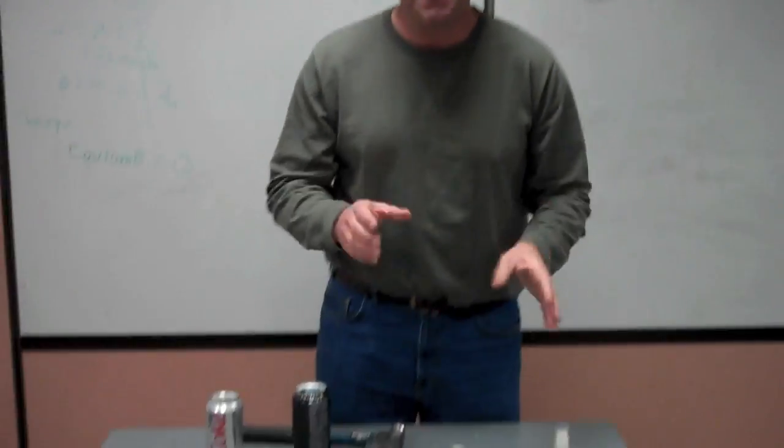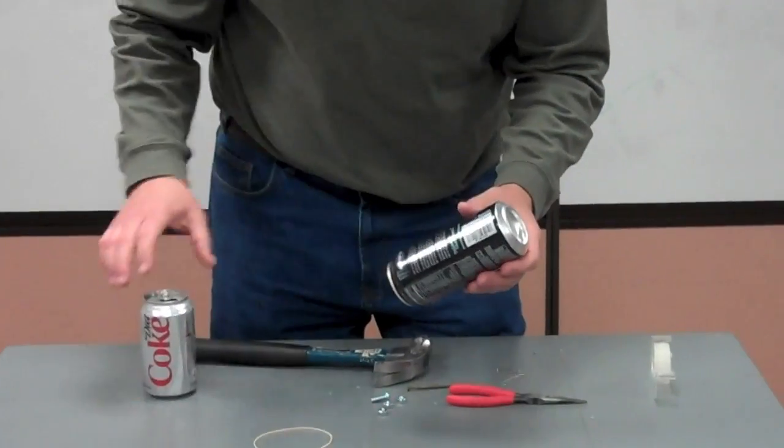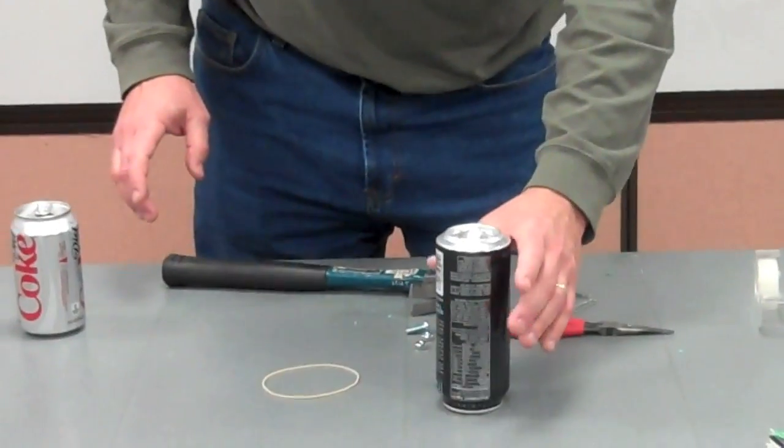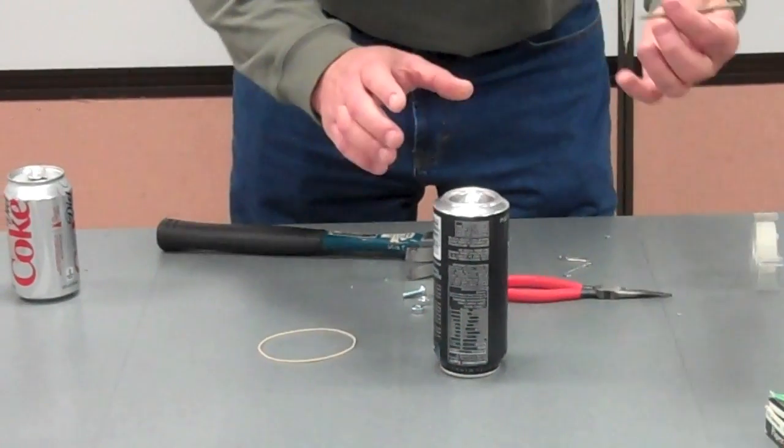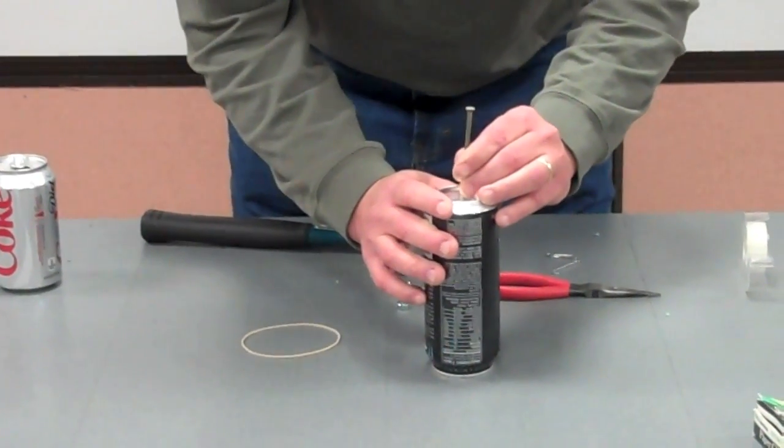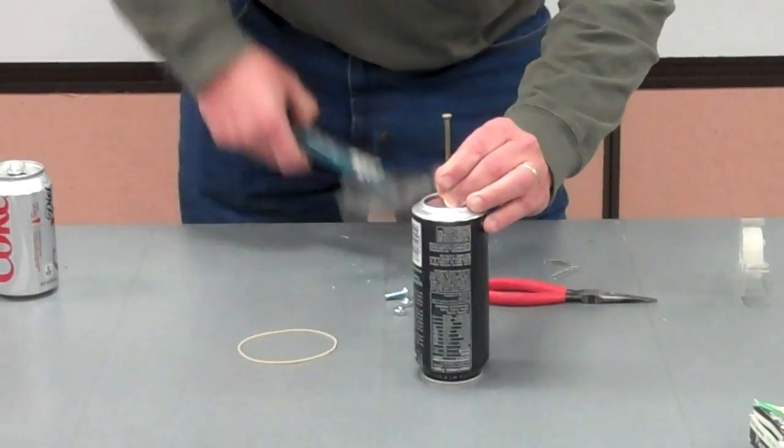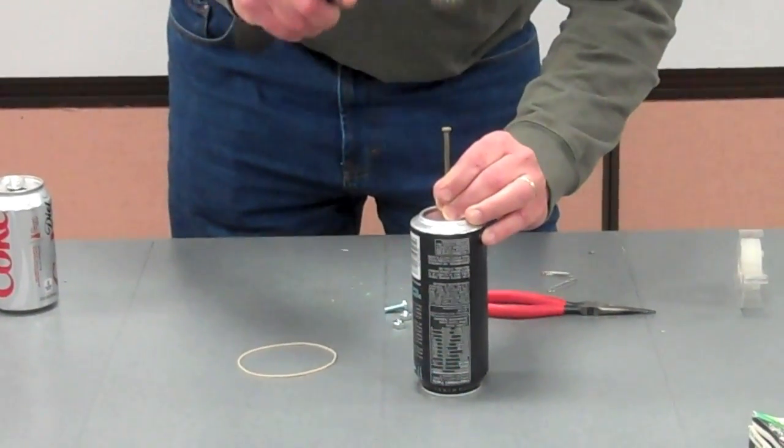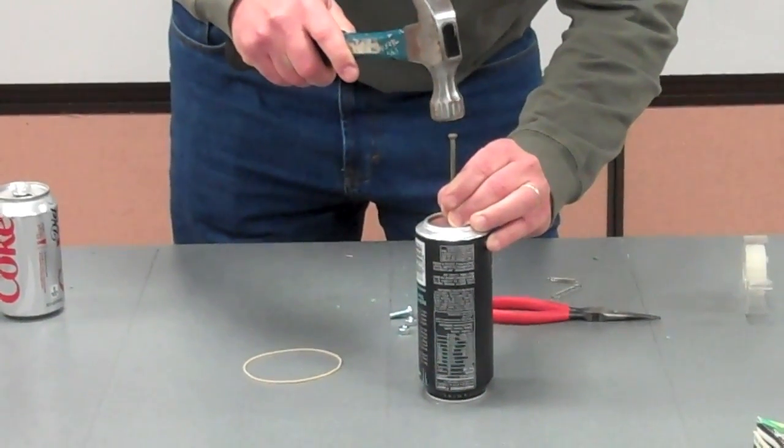So, this is how you make it. Take your aluminum can, put it upside down, take your nail, find the center of your can, and with a nice whack, but be careful, whack a hole in the center of the bottom of your can.